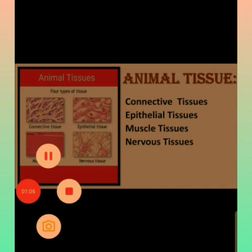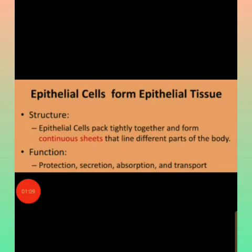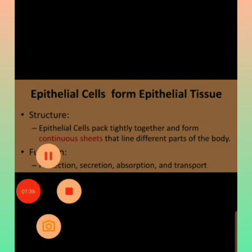Epithelial tissue is the tissue that covers the outside of the body and lines the organs and cavities. The functions of epithelial tissues are protection of the organs, secretion of substances, absorption of useful materials, and transport of various materials.